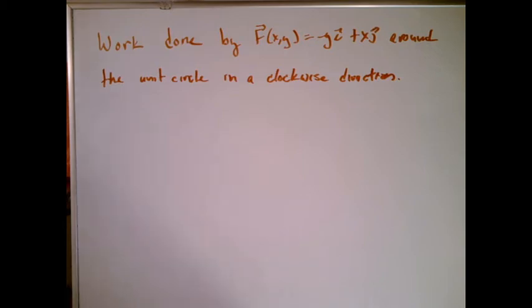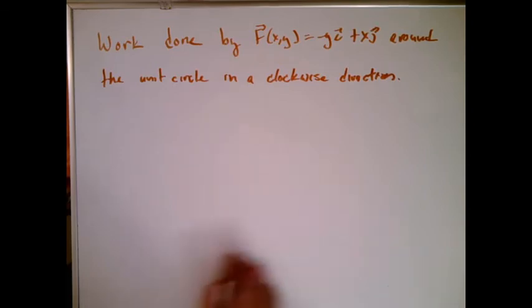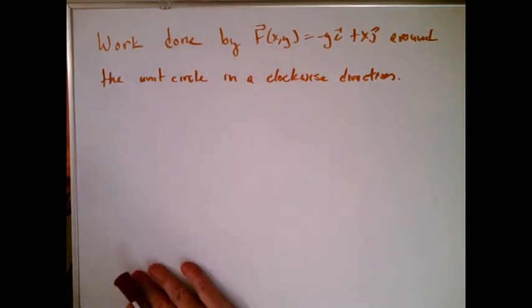What we're going to try to do here is calculate the work done by a vector field that we've now seen five or six times. This is the one that actually looks like swirl. We've seen it in this video at least once. Around the unit circle in a clockwise direction. I'm pretty sure the answer should be positive because we're actually going in the same direction as the arrows.